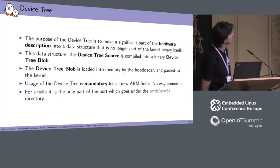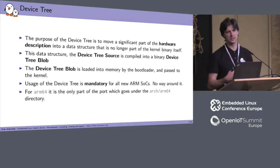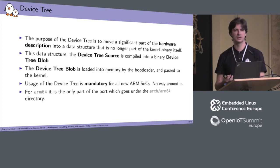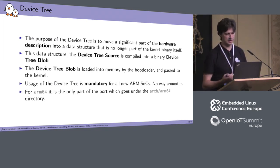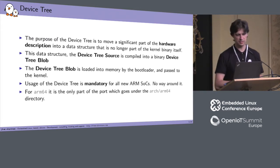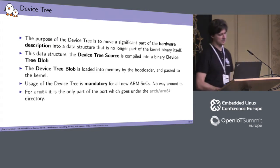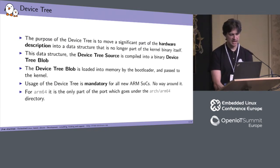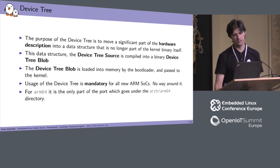The purpose of the device tree is to make an abstraction of what the hardware is — to describe the hardware separately from the code. This structure is compiled into a binary called a device tree blob. This blob is loaded in memory by the bootloader and passed to the kernel. The kernel decodes it and gets the resources from it. The usage of this device tree is mandatory for all new ARM SoCs — new ARM 32-bit and new ARM 64-bit of course. For ARM64, the device tree is the only part of the port that will go under ARM64.